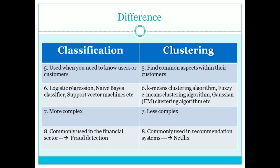Classification algorithms are more complex compared to clustering. In clustering we simply group different attributes together, whereas in classification we must classify into multiple classes with a known output — we first train the machine on data and then provide new data as input, making it a more complex process.